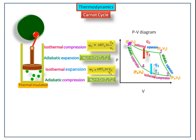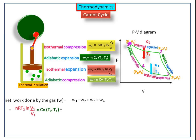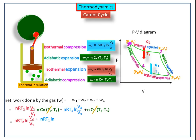Now we have all the work done values for the successive processes. To calculate the net work done by the gas, we sum the four work done values: −W1 − W2 + W3 + W4. Substituting all values, we cancel out −W2 and +W4. This gives: NRT2 ln(V2/V1) + NRT1 ln(V4/V3). By inverting V4/V3, we introduce a negative sign, giving: NRT2 ln(V2/V1) − NRT1 ln(V3/V4).